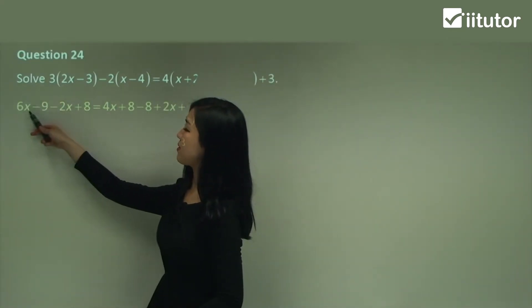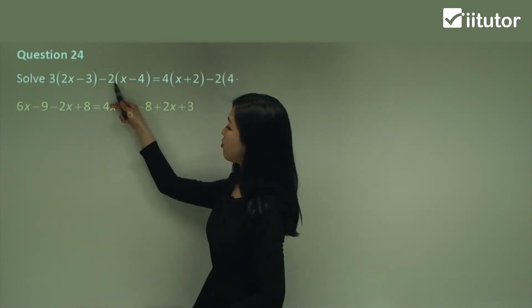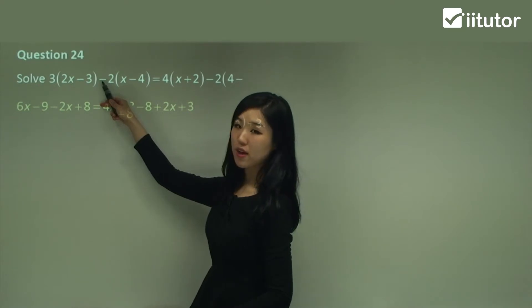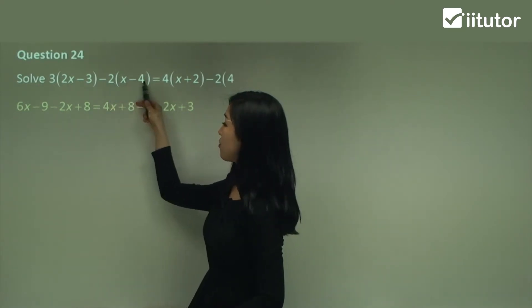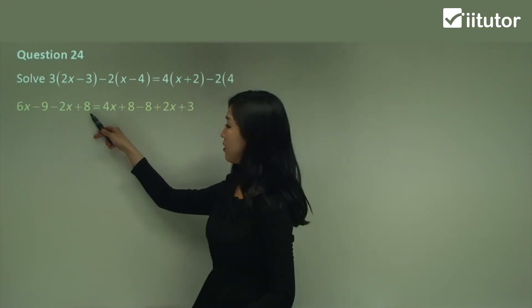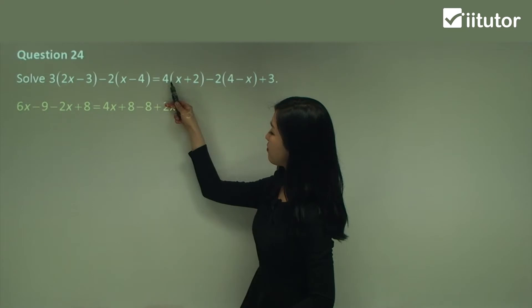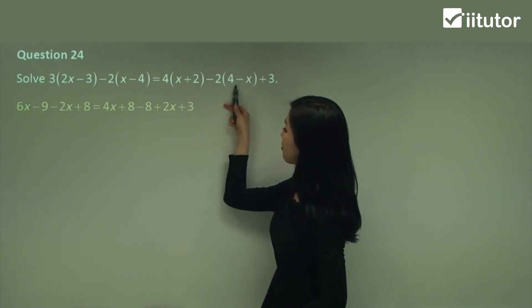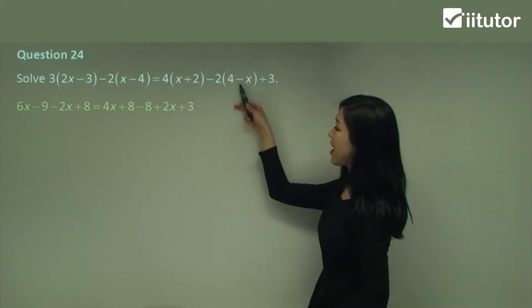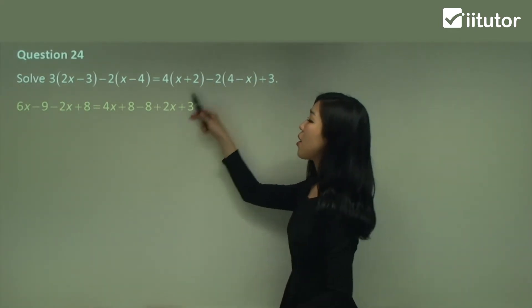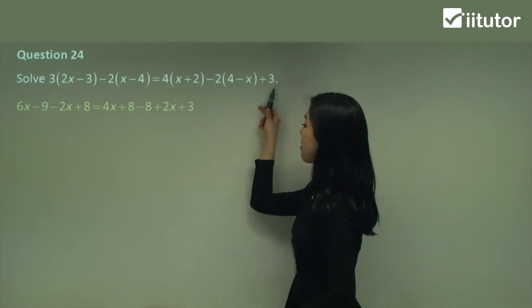3 times 2x is 6x. 3 times negative 3 is negative 9. Negative 2 times x is negative 2x. And make sure here guys, negative negative is positive. So 2 times 4 is 8. So positive 8. And it's equal to 4 times x which is 4x. 4 times 2 which is 8. Negative 2 times 4 is negative 8. And negative 2 times negative x is positive 2x. Don't forget to change that to a positive. And then plus the 3.